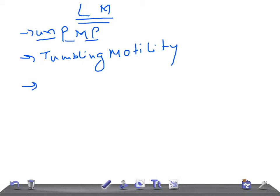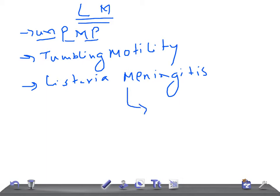The third important point for USMLE is Listeria meningitis — a very common cause of meningitis in renal transplant patients and adults with cancer.